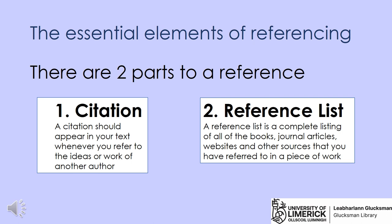There are two parts to a reference in your paper. First off is the in-text citation. A citation should appear in the main body of your text, and this appears whenever you refer to the ideas or work of another author. The second part is your reference list item. A reference list is a complete listing of all the books, journal articles, websites and other sources that you have referred to in a piece of work. Your reference list will appear on a separate page at the end of your document or paper.